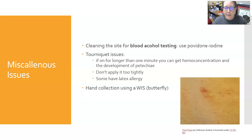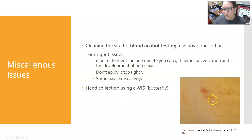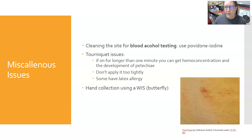When cleaning the site for blood alcohol testing, you cannot use alcohol — you must use povidone iodine instead. If you leave the tourniquet on too long — longer than a minute — you can get hemoconcentration and the development of petechiae, which are little pinpoint bruises. You do not want to put the tourniquet on too tightly, but it does need to be tight enough to reveal the veins. Be aware that some patients may have a latex allergy, though most tourniquets are non-latex now.